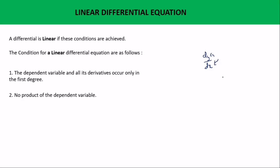This means you do not have a product like y·dx times y — that would make the equation non-linear. The third condition is: no transcendental function of the dependent variable. This means you shouldn't have something like cos(y), where y is the dependent variable, because multiplying the dependent variable by a transcendental function makes the equation non-linear.